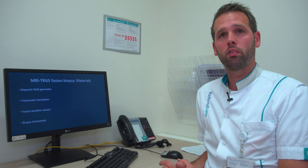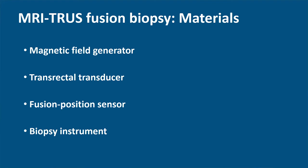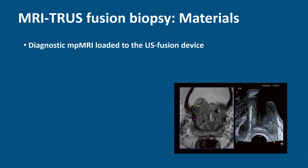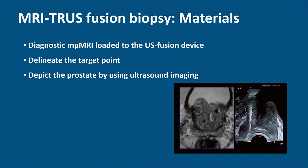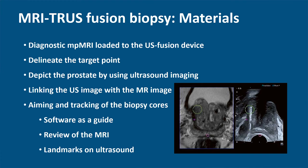The MRI-TRUS fusion setup usually consists of a magnetic field generator, a transrectal transducer, a fusion position sensor, and a biopsy instrument. The MRI-TRUS fusion biopsy procedure consists of the following steps. The first step is to upload the multiparametric MRI into the ultrasound device. The second step is to delineate the target point, which can be done by the radiologist up front; otherwise you have to do it yourself. The next step is to detect the prostate using ultrasound imaging, followed by linking the ultrasound imaging with the multiparametric MRI imaging. The next step is aiming and tracking of the biopsy course.